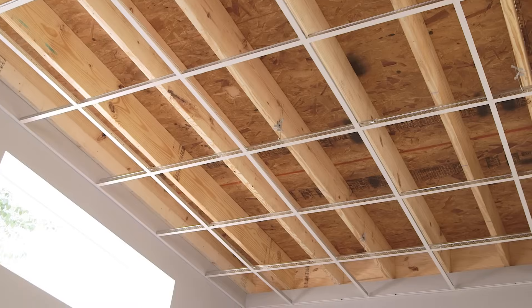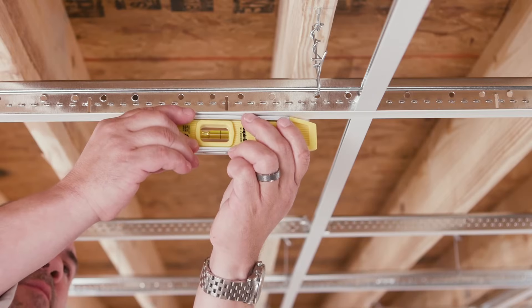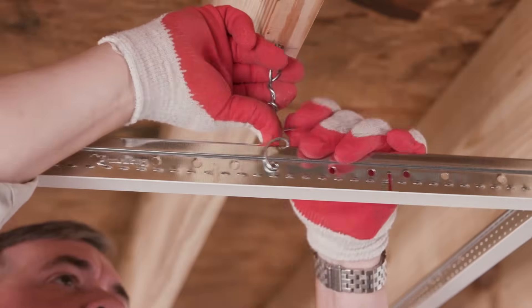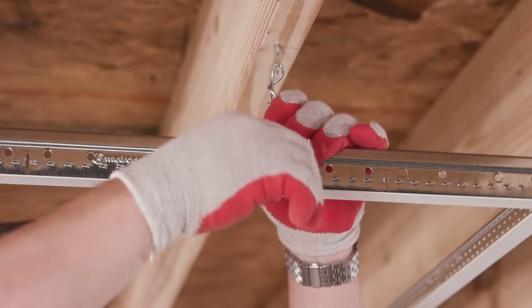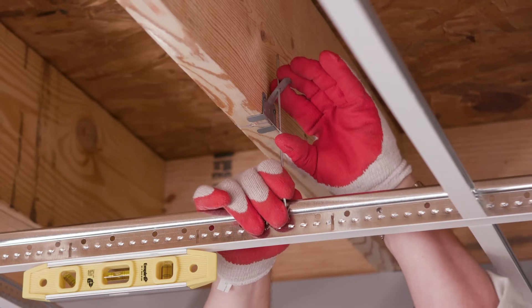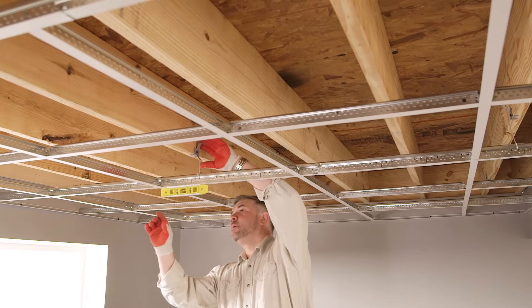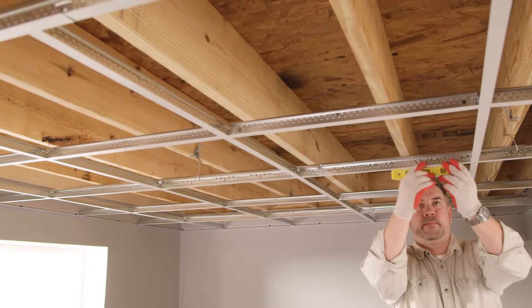Final leveling: If using hanger wire, your grid should be level at this time. Check by using a magnetic level. Unbend and retie wires if adjustments are required. If you are using quick hang hardware, start with your first installed main beam in the corner of the room with a magnetic level and adjust as needed. Continue working your way across the room by squeezing the adjustable tabs and raising or lowering the hooks until your system is level.